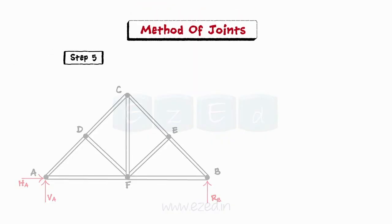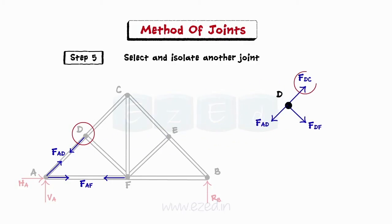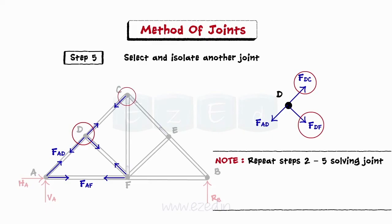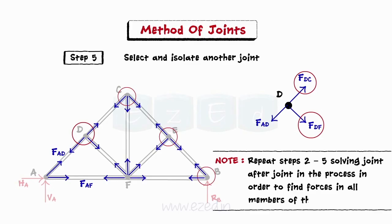Step 5: Mark the magnitude and nature of the forces calculated on the parent truss. Then select and isolate another joint having only two members with unknown forces. Kindly note that we will repeat steps 2 to 5 solving joint after joint in this process in order to find forces in all members of the truss.